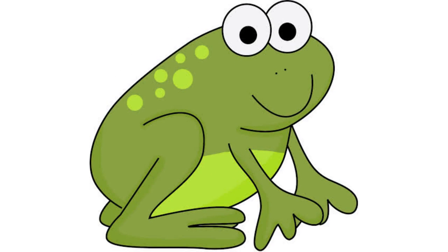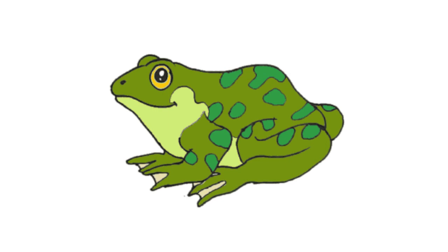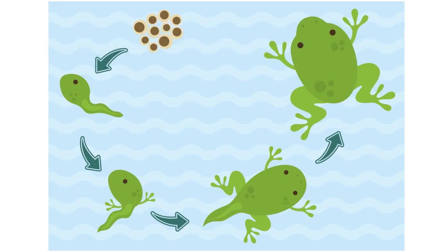Animals that spend the first part of their life in the water and the second part of their life on land are called amphibians. During the early stages, frogs and other amphibians have gills for breathing, just like fish. Then they develop lungs so they can breathe on land like we do. Metamorphosis is the change of shape during an animal's life.